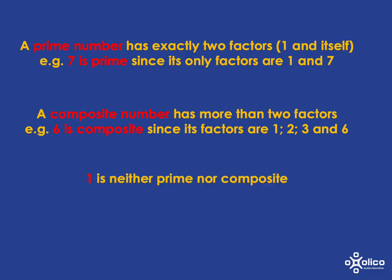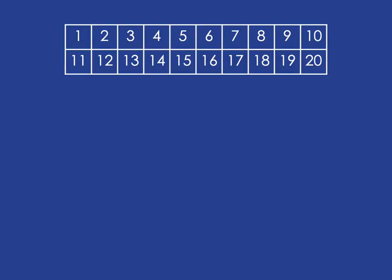One is a special number — it's neither prime nor composite — because it actually only has one factor, which is the number one itself. Let's have a look at the prime numbers less than 20.